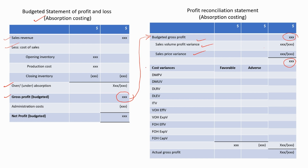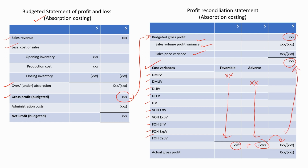Then we have to adjust for the cost variances. All cost variances should be included here, such as direct material, direct labor, variable overhead, and fixed overhead. If the variances are favorable, we add them; if adverse, we add them to the adverse column. Finally, we calculate the total favorable and total adverse variances, then combine these two values to arrive at the total variance value. If it is positive, we add it to the adjusted budgeted gross profit; if negative, we deduct it. So we can finally arrive at the actual gross profit, which can be a profit or a loss. This is how we reconcile the budgeted profit under the absorption costing system.